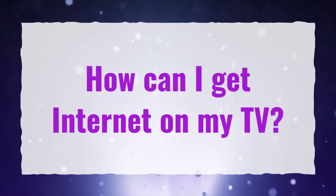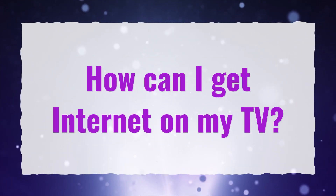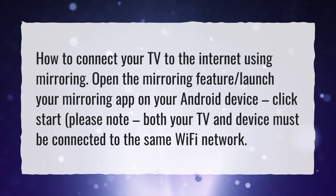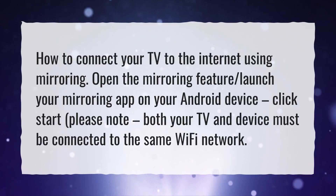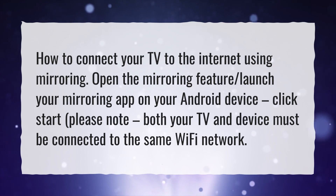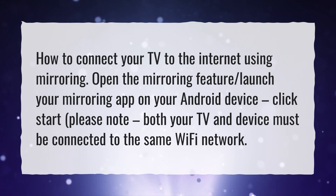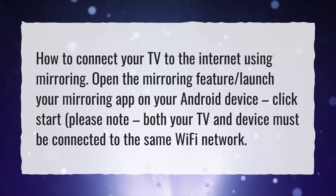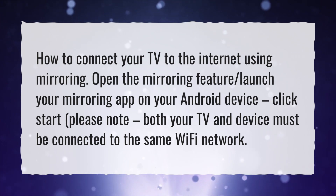How can I get internet on my TV? How to connect your TV to the internet using mirroring: open the mirroring feature and launch your mirroring app on your Android device. Click Start. Please note: both your TV and device must be connected to the same Wi-Fi network.